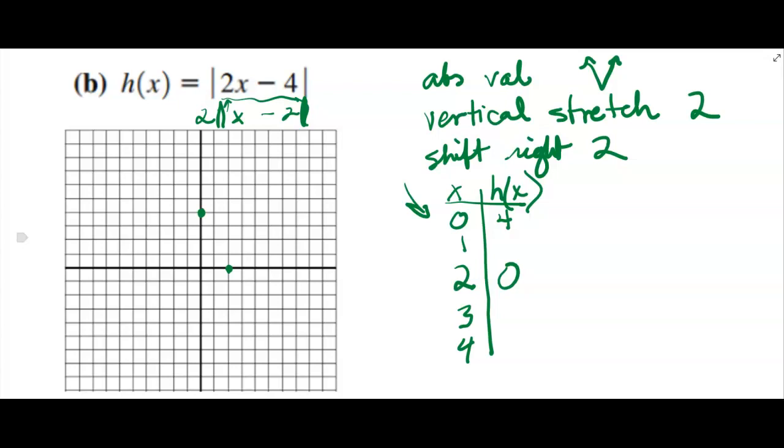And then if I plug in 1, I get 1 minus 2 is negative 1. Absolute value is 1, 1 times 2 is 2. And then I didn't graph it. 1, 2.